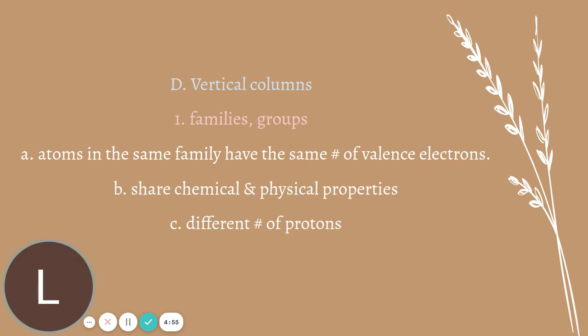The vertical groups we call families or groups, the vertical columns. We call them families because they have similar physical and chemical properties, and that's because they have the same number of valence electrons. That means the outermost electrons are the same. Everybody in group one has one valence electron. They all have different number of protons, so they have different number of electrons, but on the very last energy level, the most outer energy level, the farthest from the nucleus, has the same amount of valence electrons. So group one has one, group two has two.